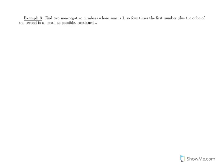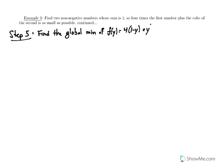Step 5: find the global min of f(y) = 4(1 - y) + y³ = 4 - 4y + y³ on [0, 1]. Find the derivative: f'(y) = -4 + 3y². Set equal to zero: 3y² = 4, y² = 4/3, y = ±2/√3.